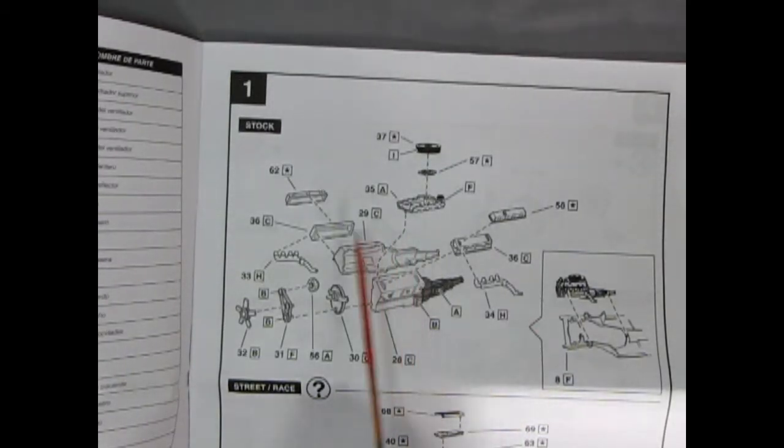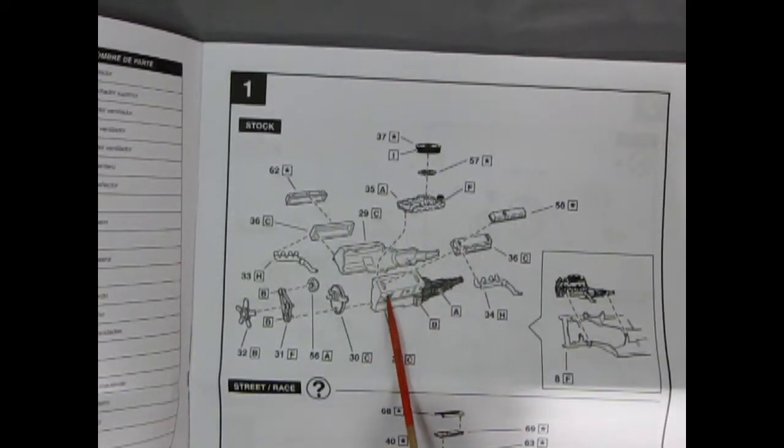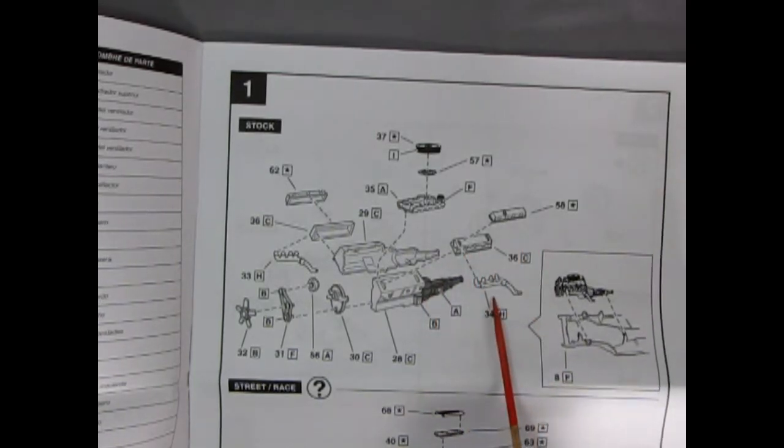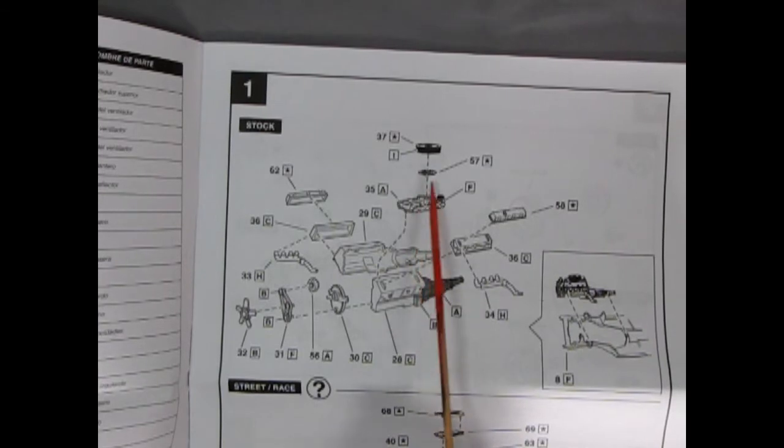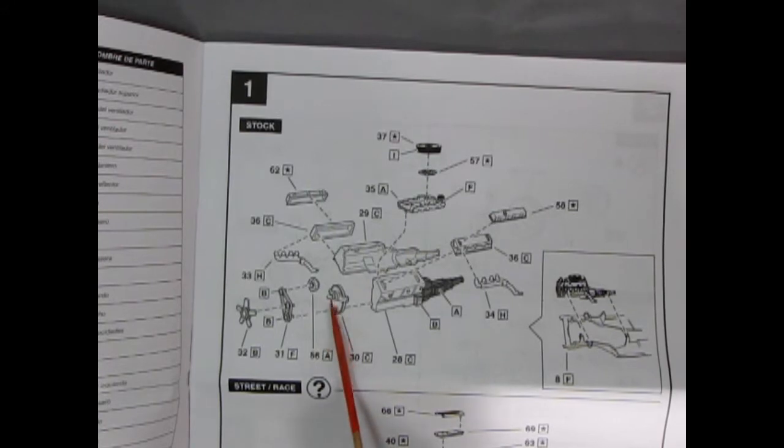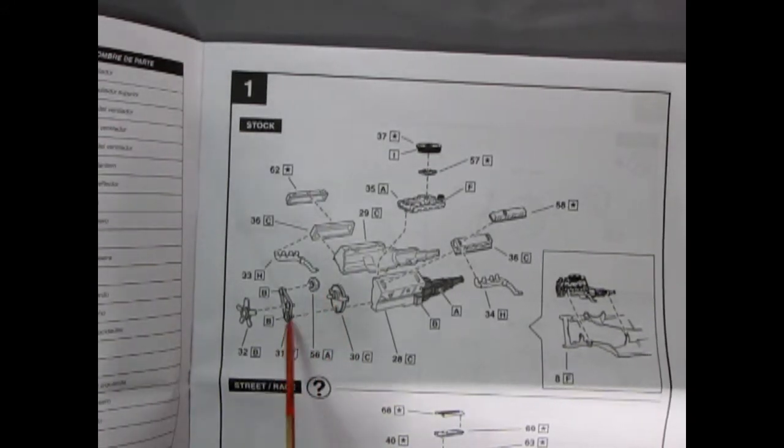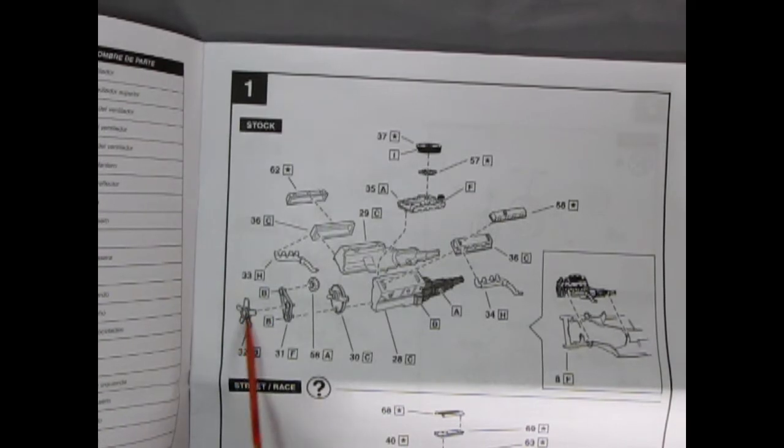Here we have our stock engine with the right and left hand engine block, with the transmission molded in place. Our cylinder heads, valve covers, exhaust manifolds, intake manifold, carburetor, air cleaner, the front water pump cover, alternator, belts and pulleys, and our fan with the clutch.